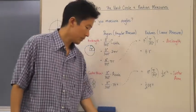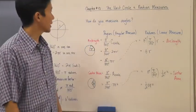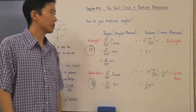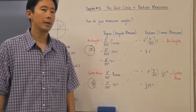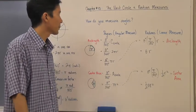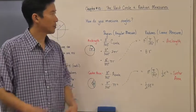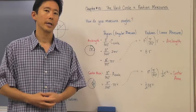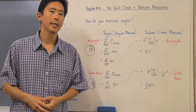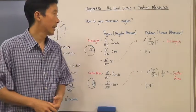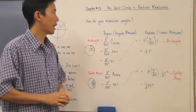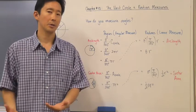Okay, hello everyone. Let's go ahead and take a look at chapter number 10, called the unit circle and gradient measures. What we're going to do is first try to define exactly what a radian is, and the main question we need to answer is: how do you measure angles?